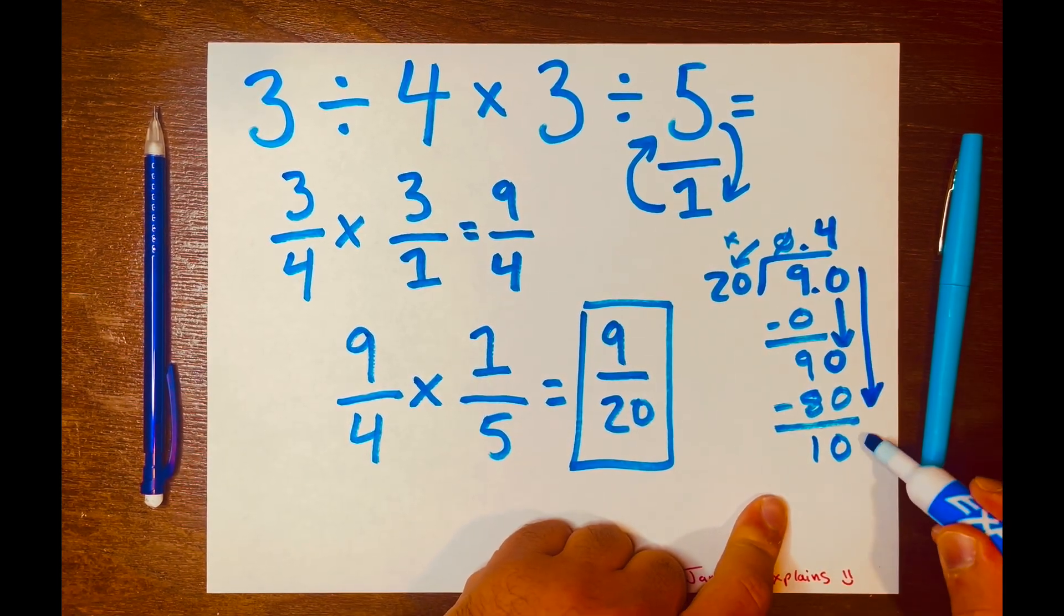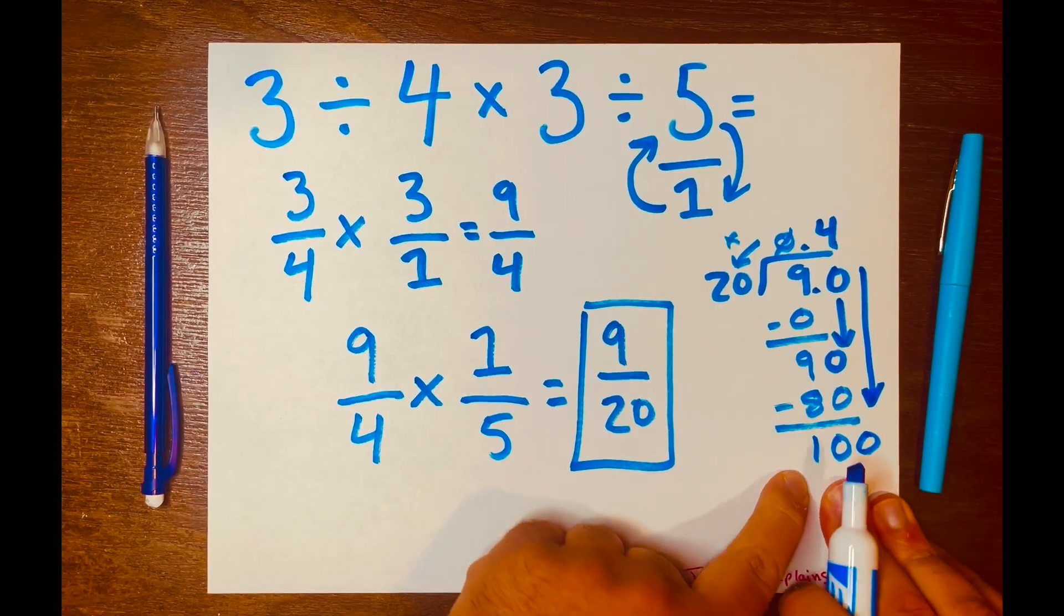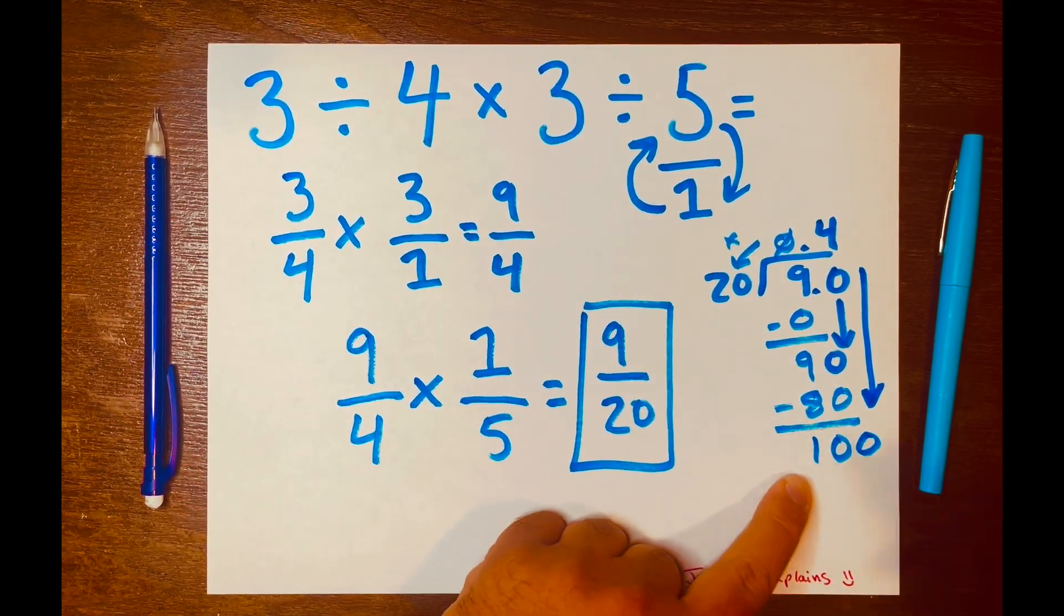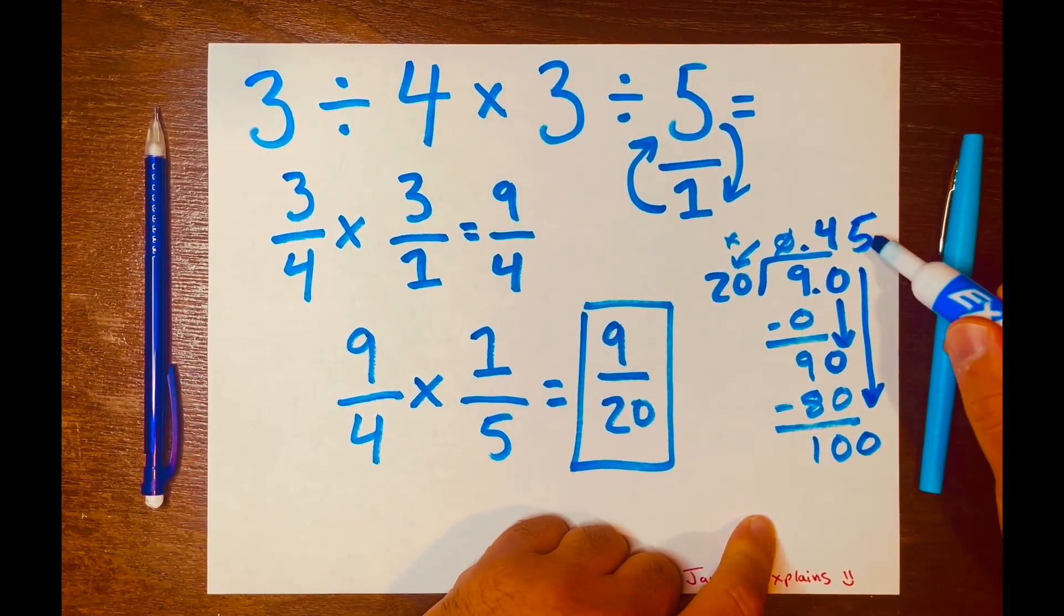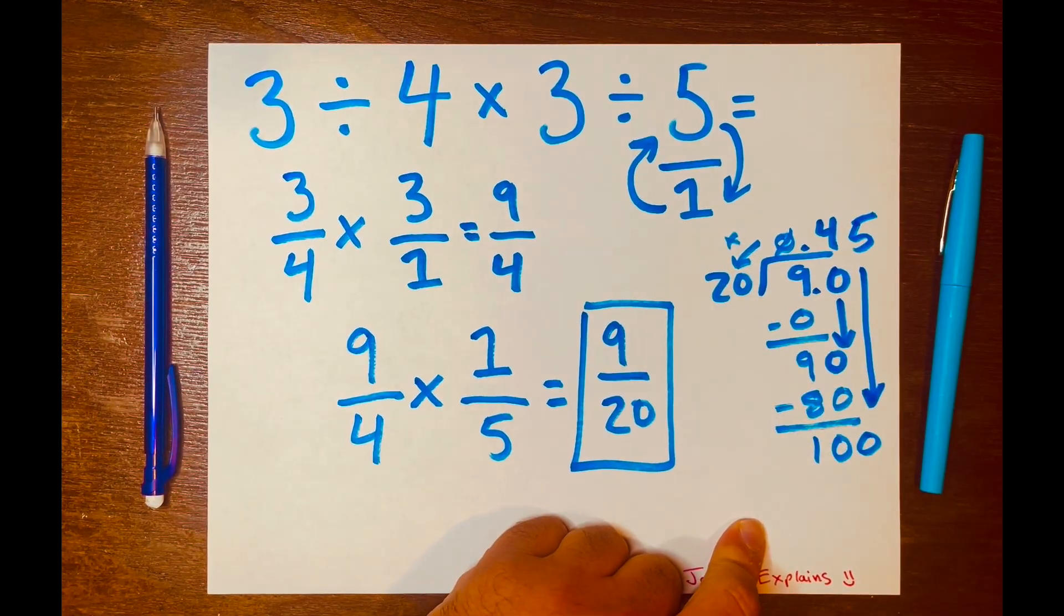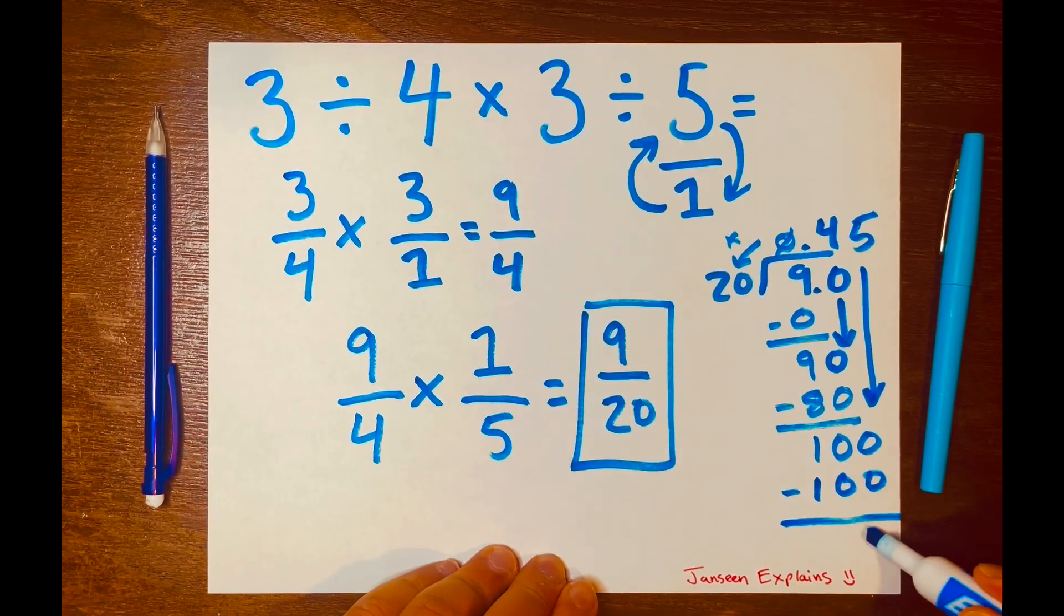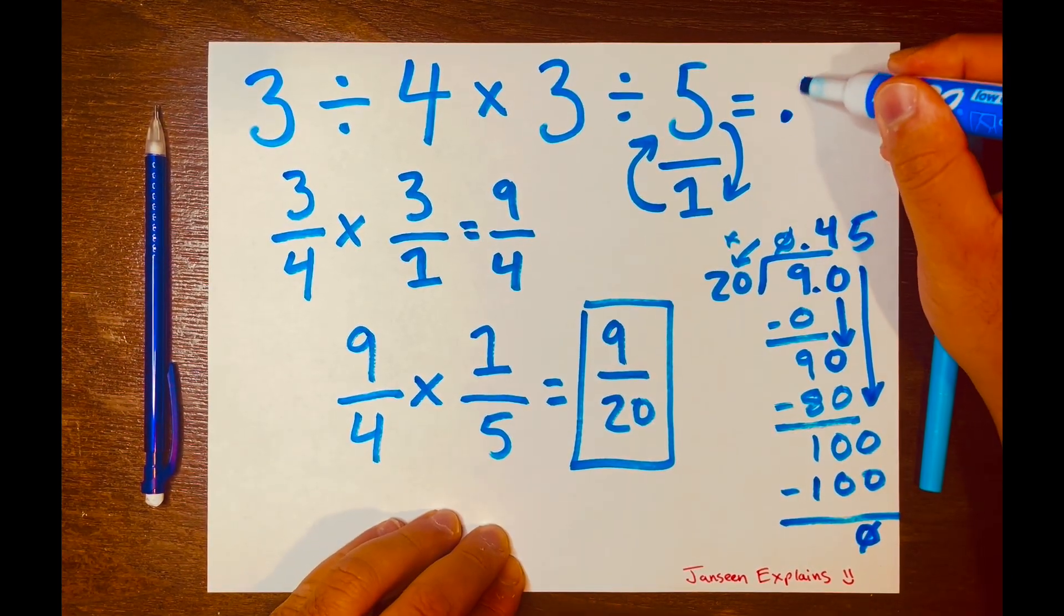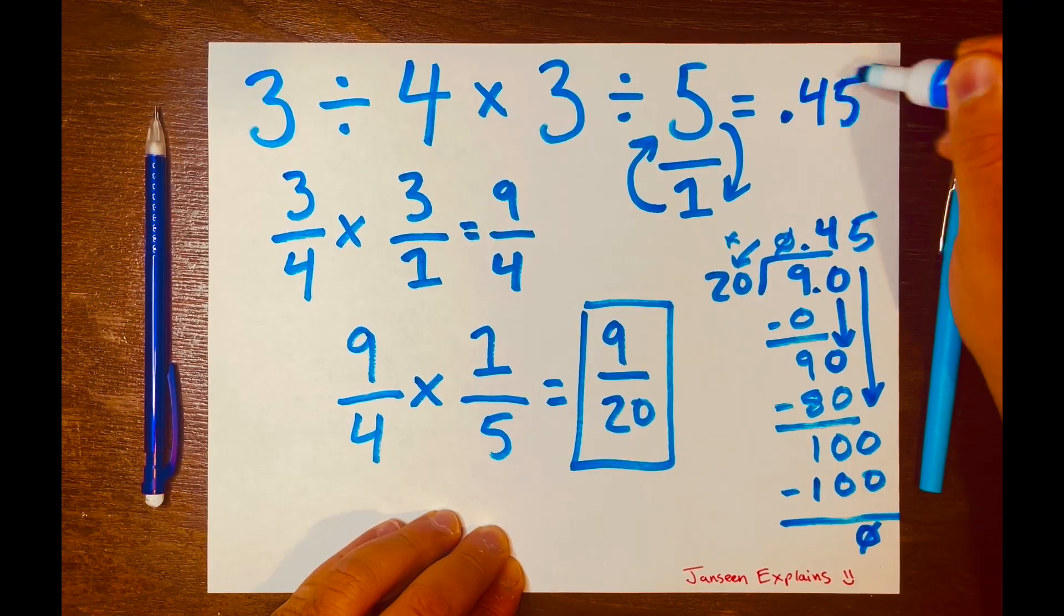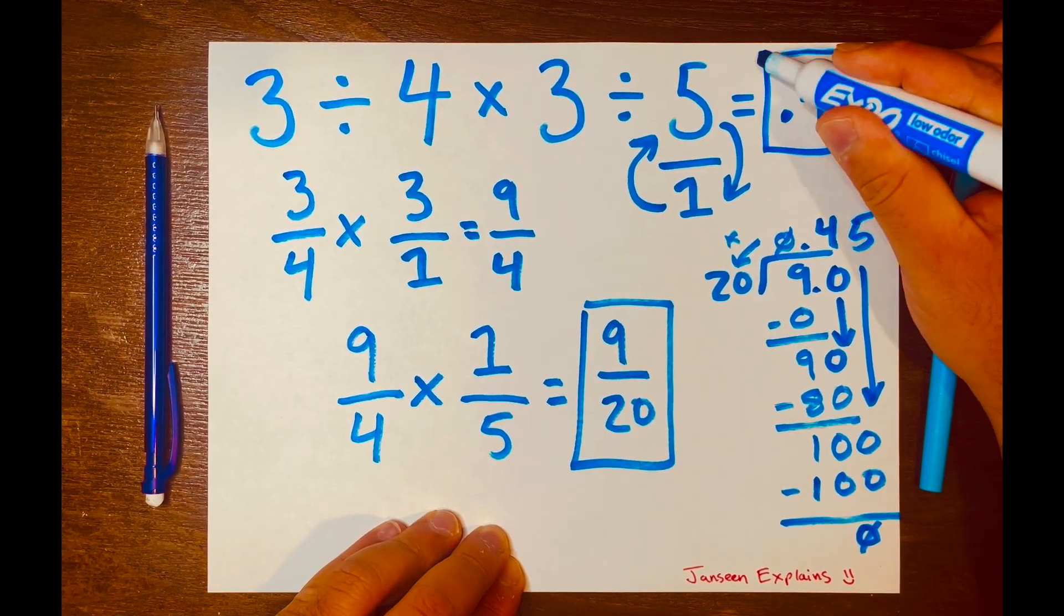Now we have 100. How many times can 20 fit into 100? Five times. So five times 20 is 100, and 100 minus 100 is zero. So your answer in decimal form is 0.45. And there you go.